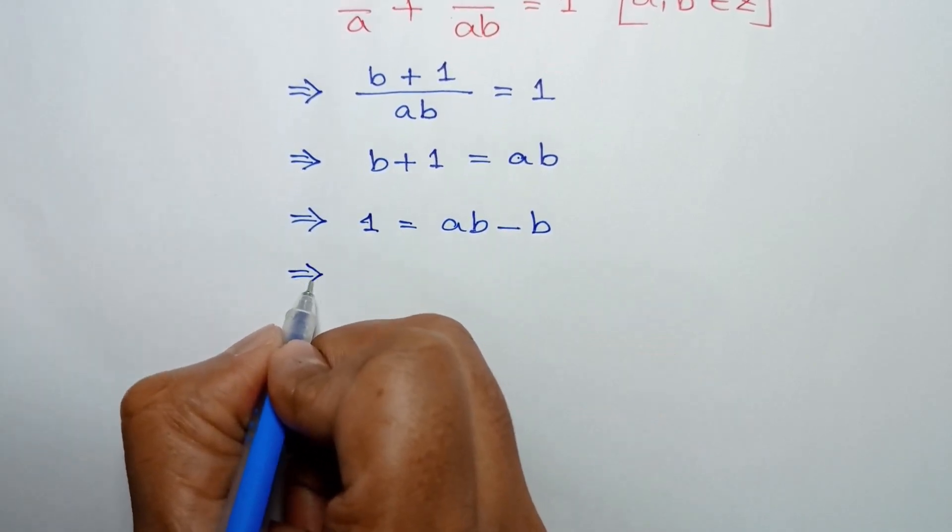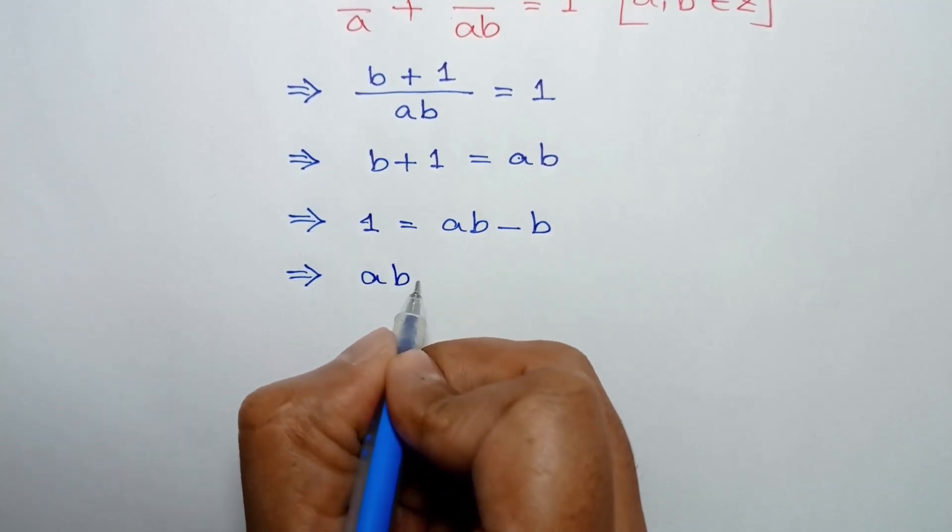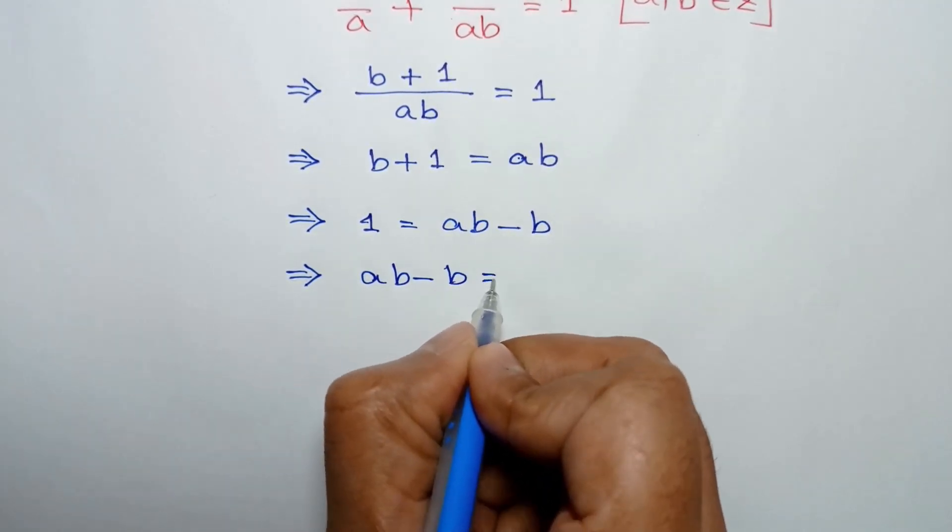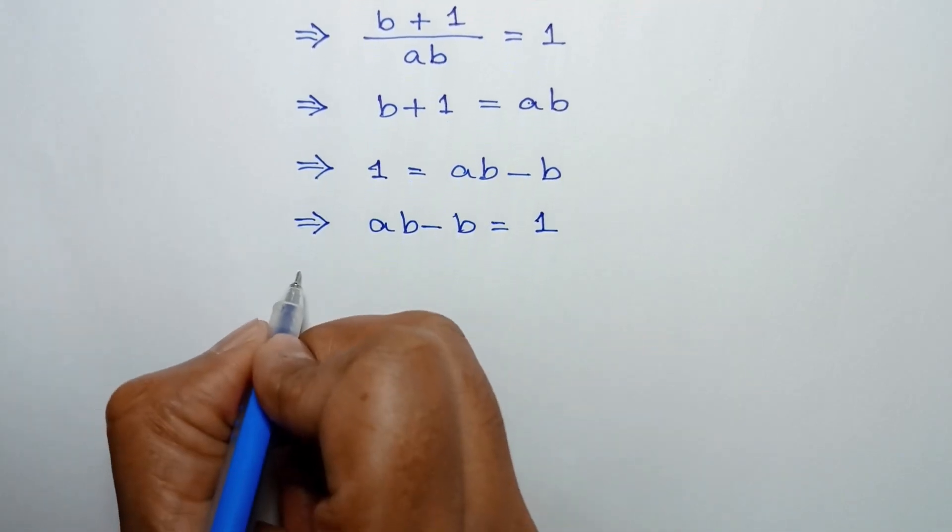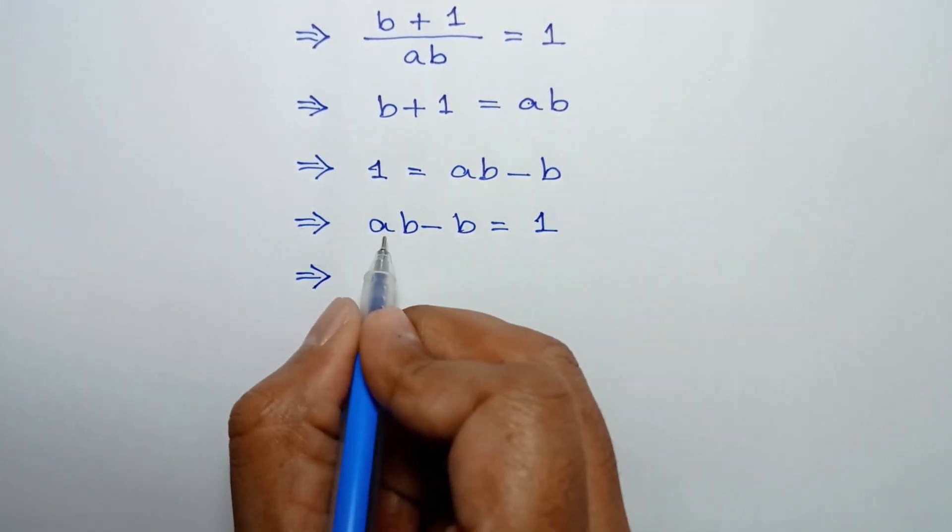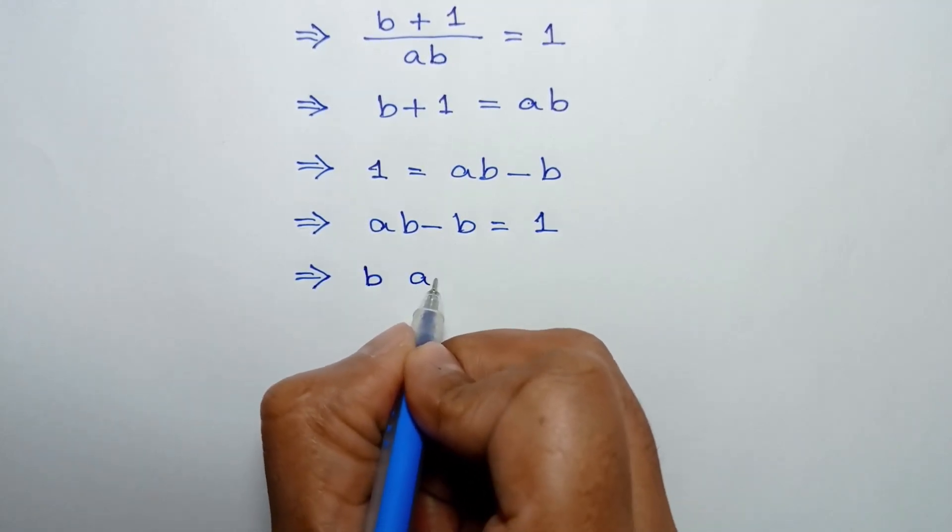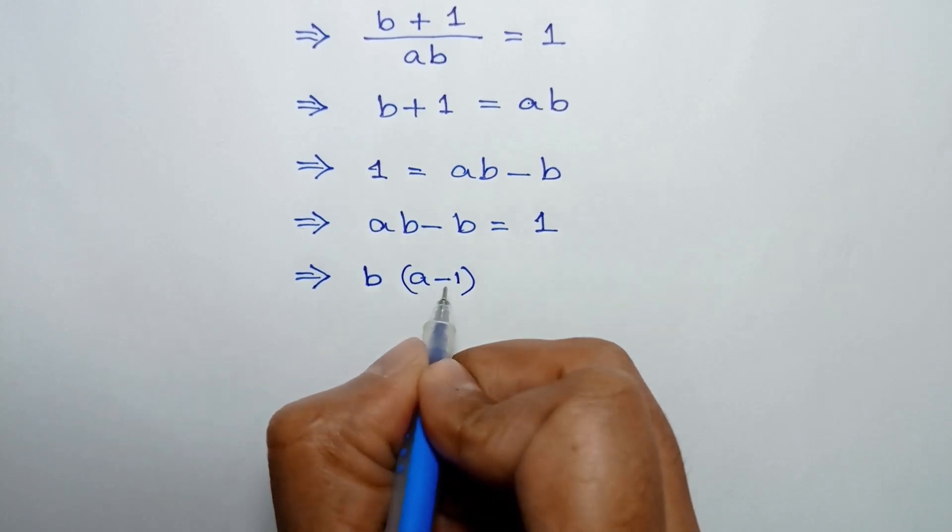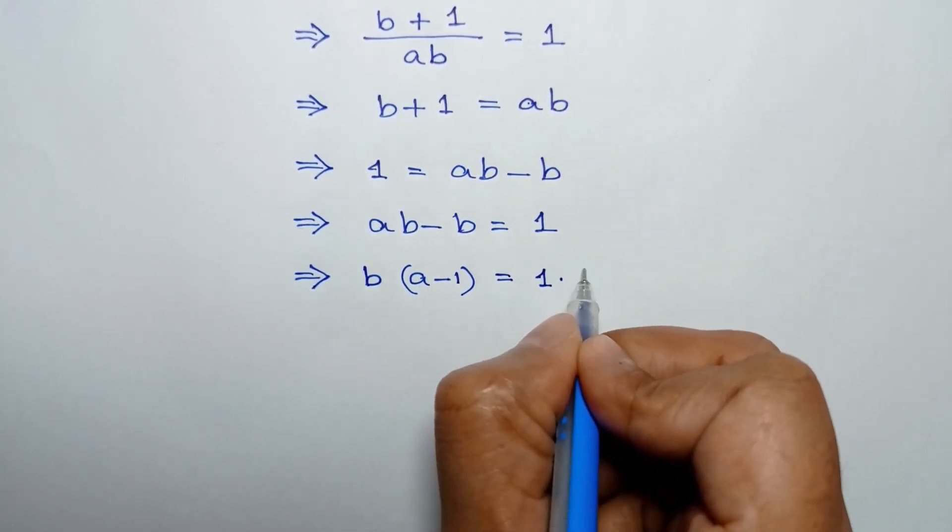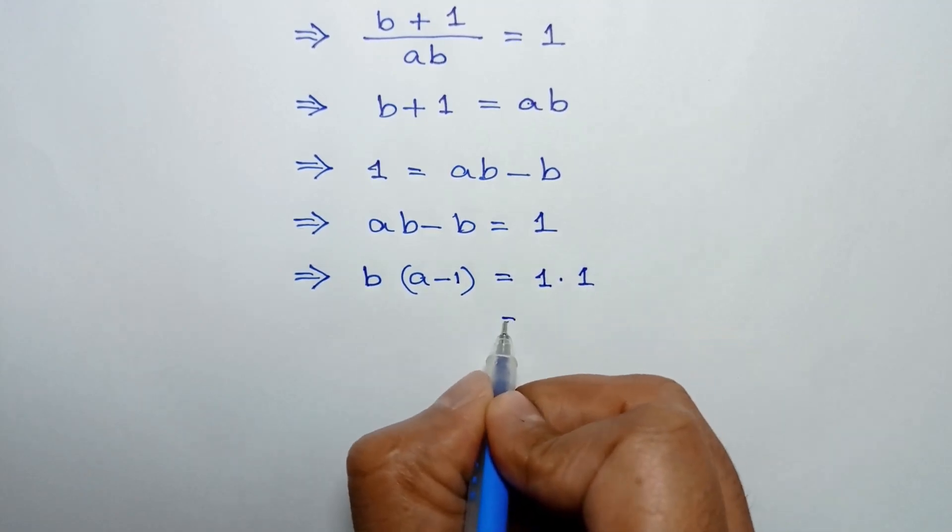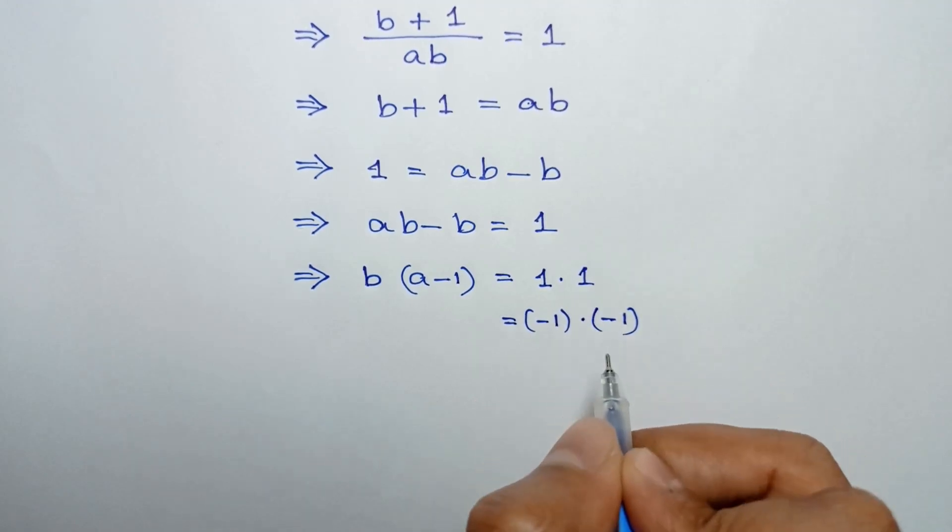Or exchanging sides, we can write ab - b = 1. Or taking common b, we can write b times (a - 1) = 1, which can be written as 1 times 1 or negative 1 times negative 1.